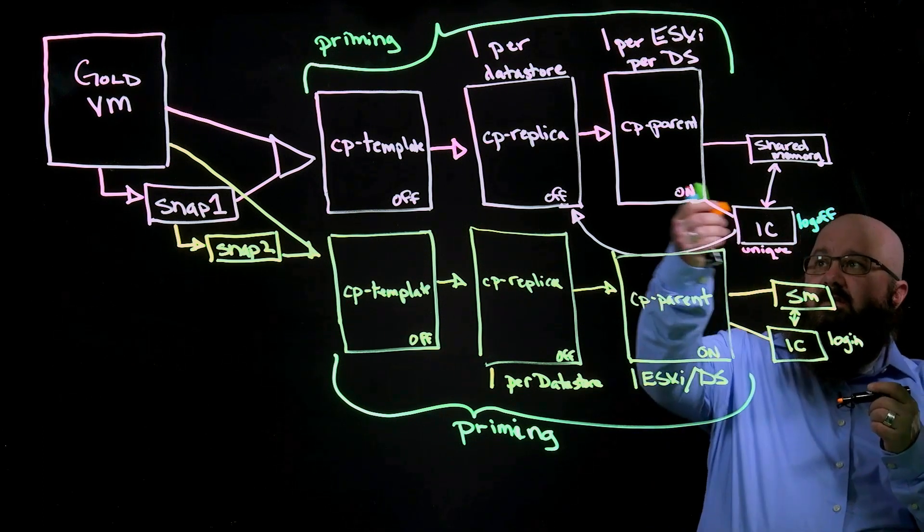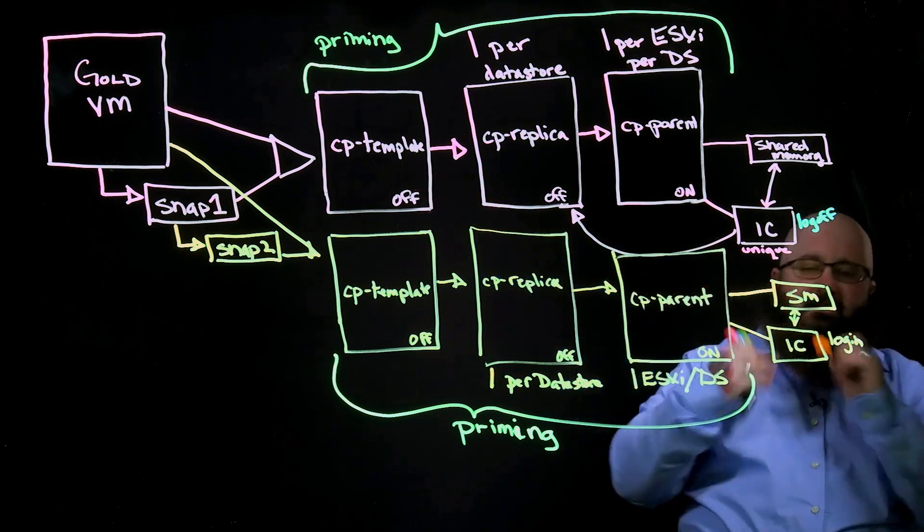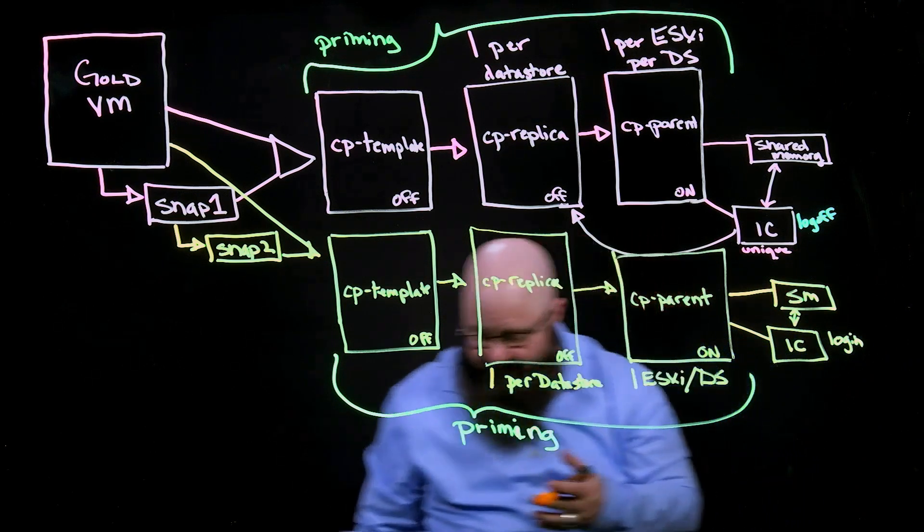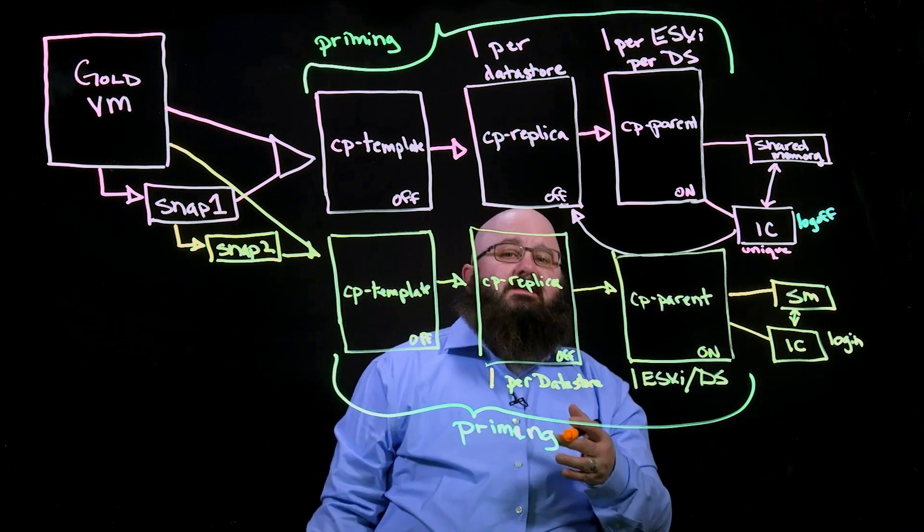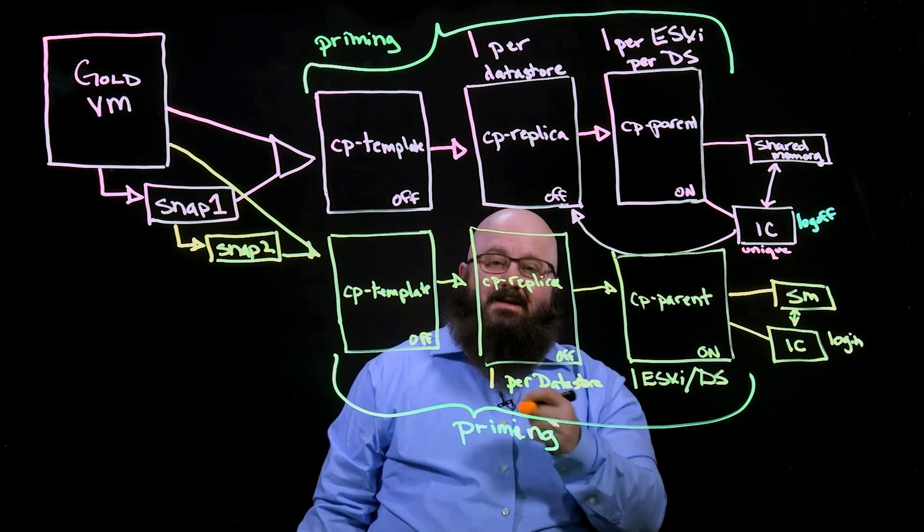And so once all of my instant clones are completely logged off, this would all disappear. And I just have the one. And so that's how we actually go through that process. So I hope this LightBoard has helped you understand how instant clones work. And we'll see you the next time in our next LightBoard session.